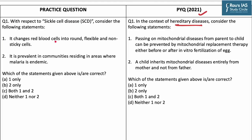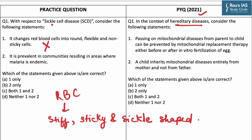Statement 1: it changes red blood cells into round, flexible, and non-sticky cells. Now this is an incorrect statement. This is because red blood cells are originally round, flexible, and non-sticky, but because of sickle cell disease they are converted into stiff, sticky, and sickle-shaped cells.